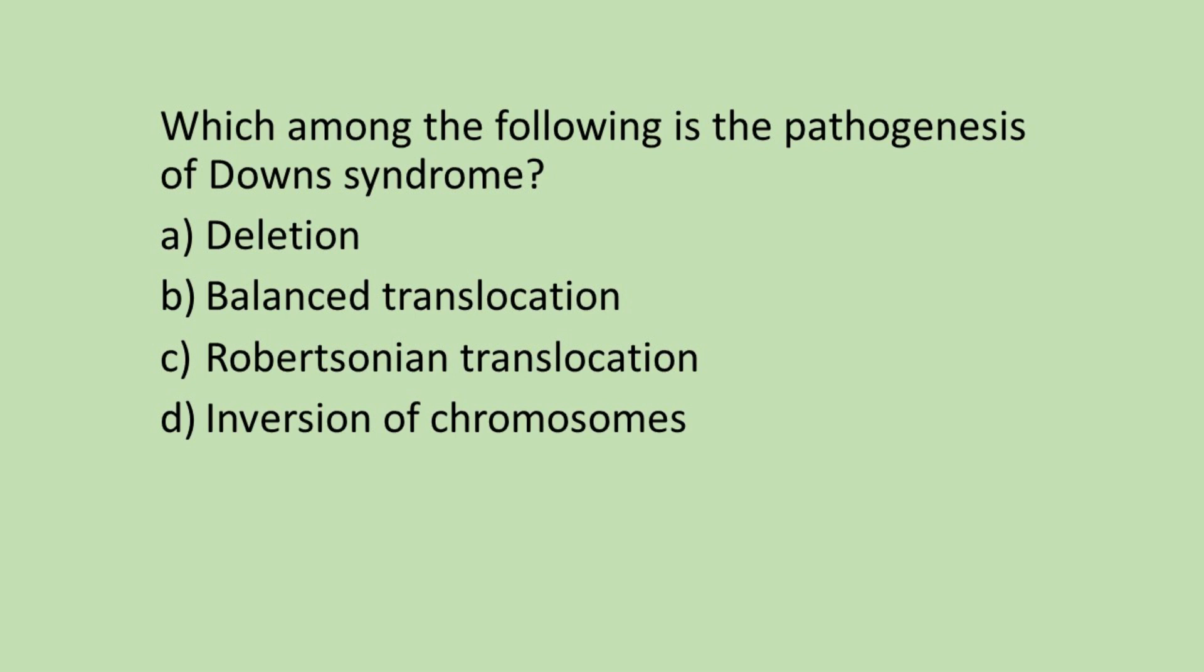Now let's have a look into this question. Which among the following is the pathogenesis of Down syndrome? Option A: deletion, option B: balanced translocation, option C: Robertsonian translocation, option D: inversion of chromosomes.